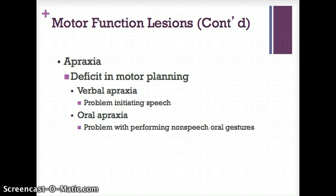Another motor function lesion is apraxia of speech. Unlike the dysarthrias, apraxia develops in the absence of muscular weakness or dysfunction. In dysarthria there's something wrong with the muscles — they're weak or paralyzed — but in apraxia there's no muscular weakness. It's a deficit in motor planning: your brain telling your muscles in your mouth to move to articulate sounds — there's a disconnect there.